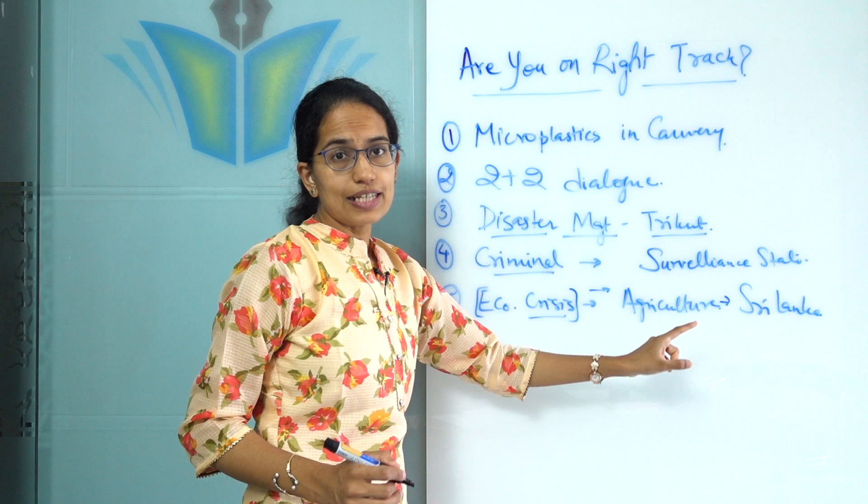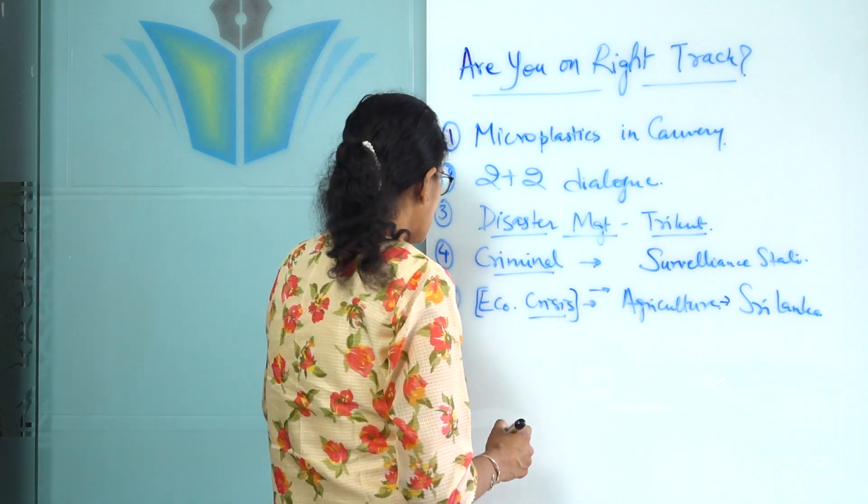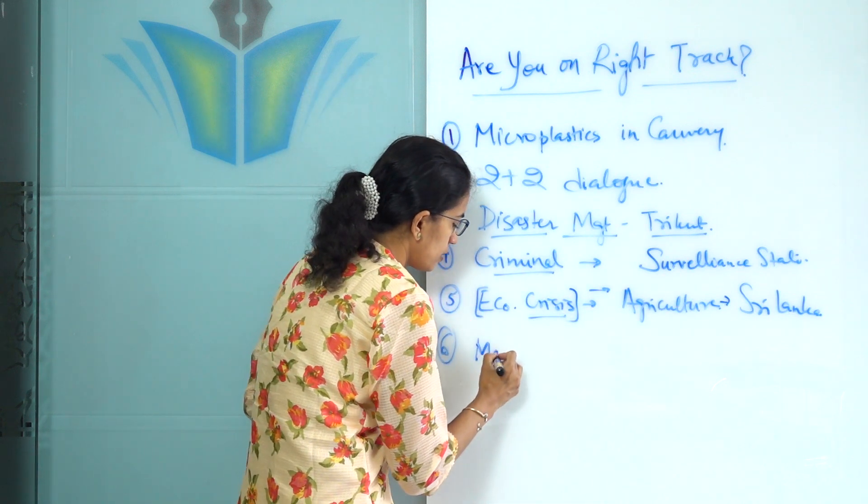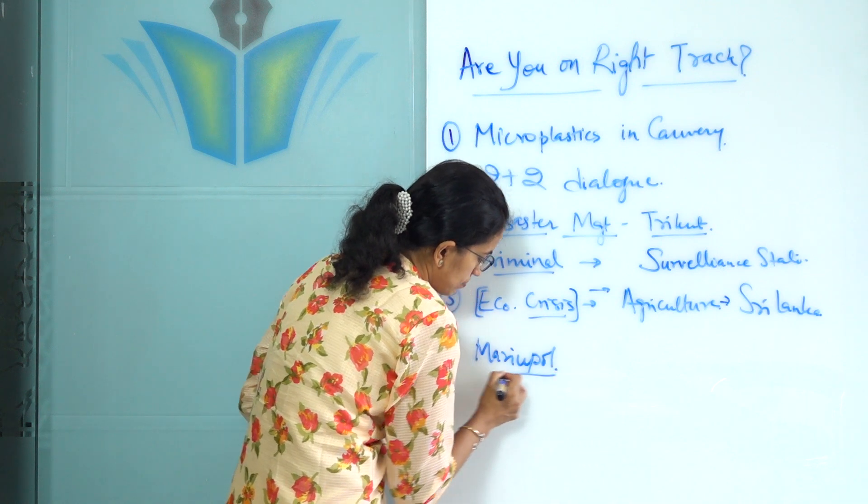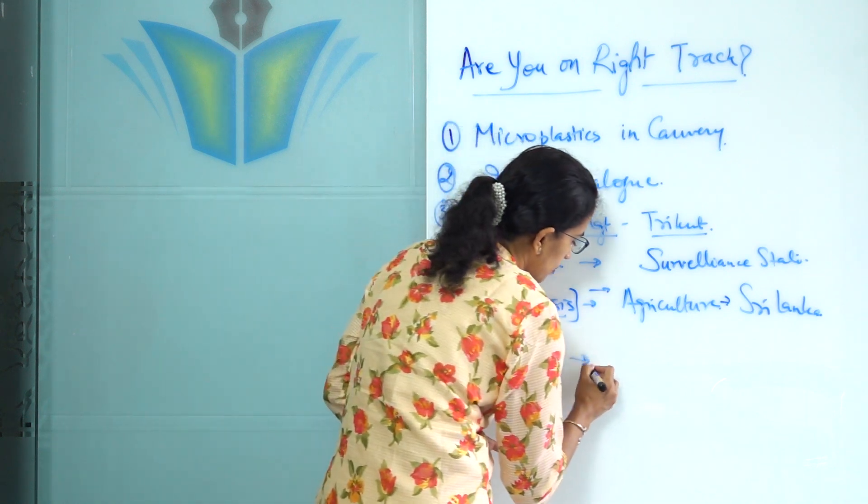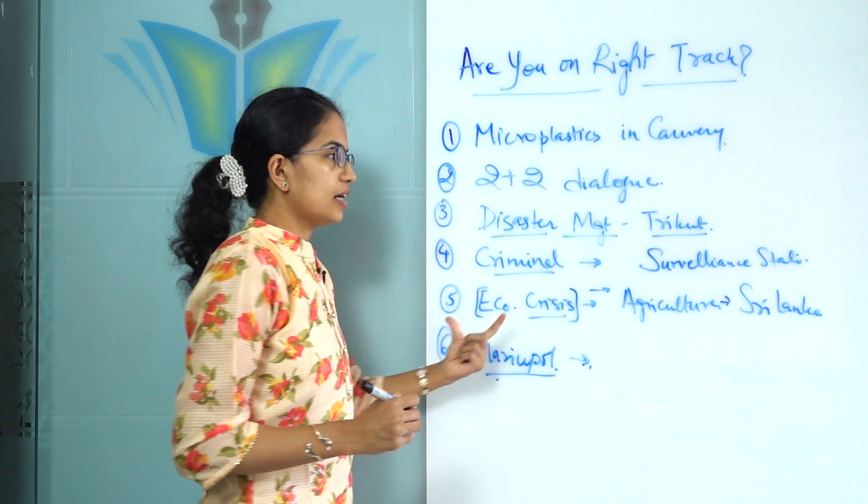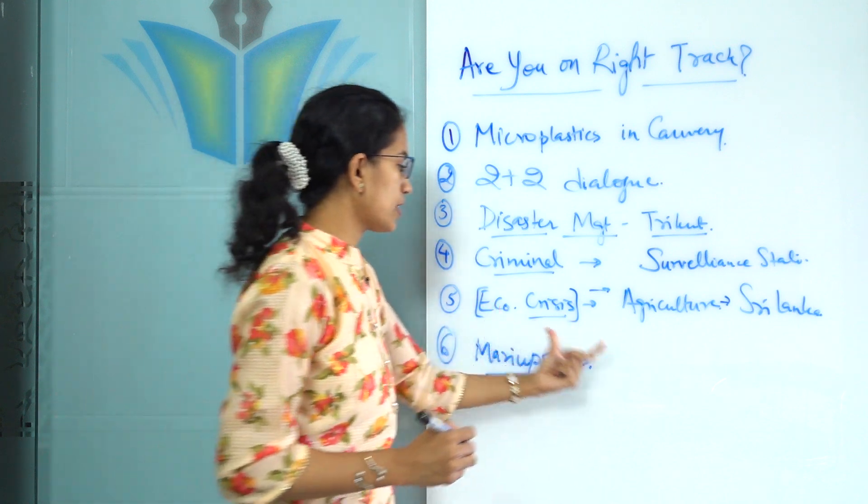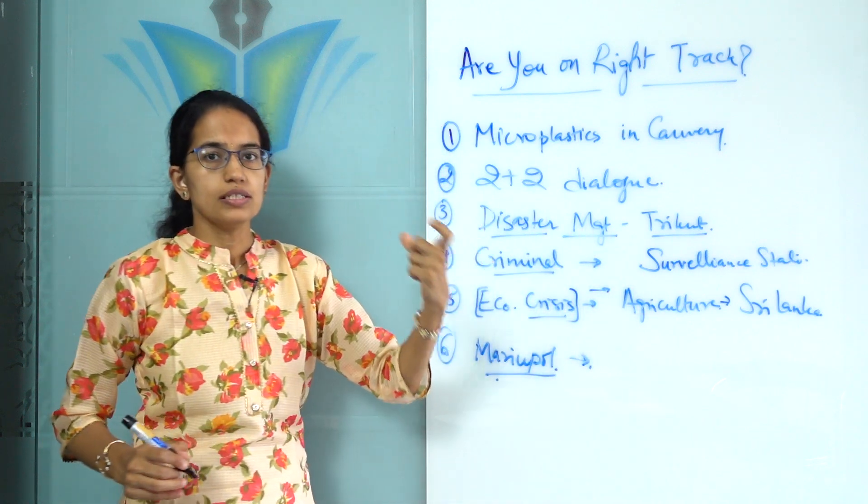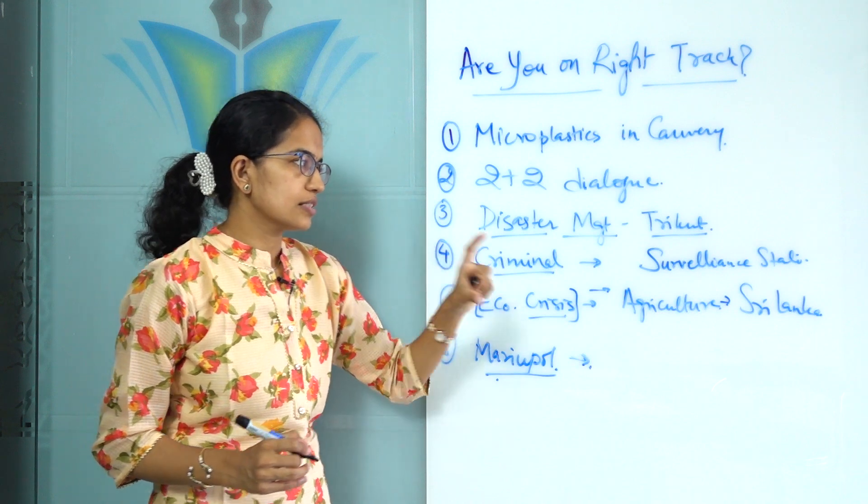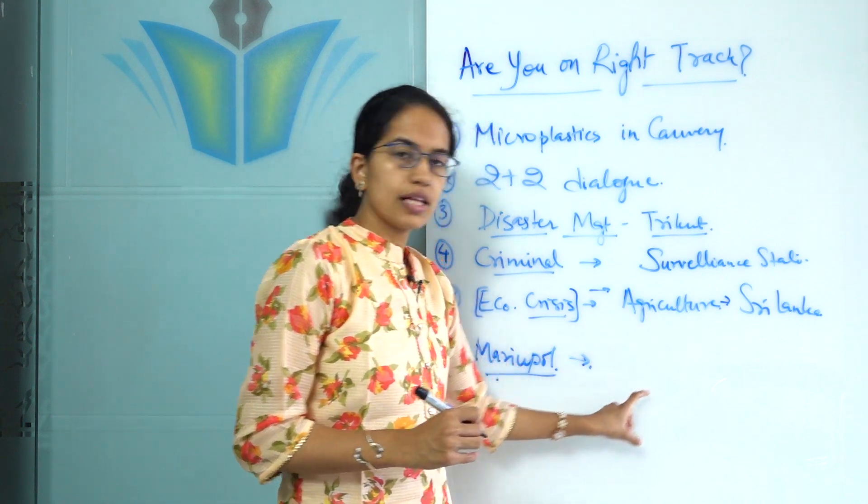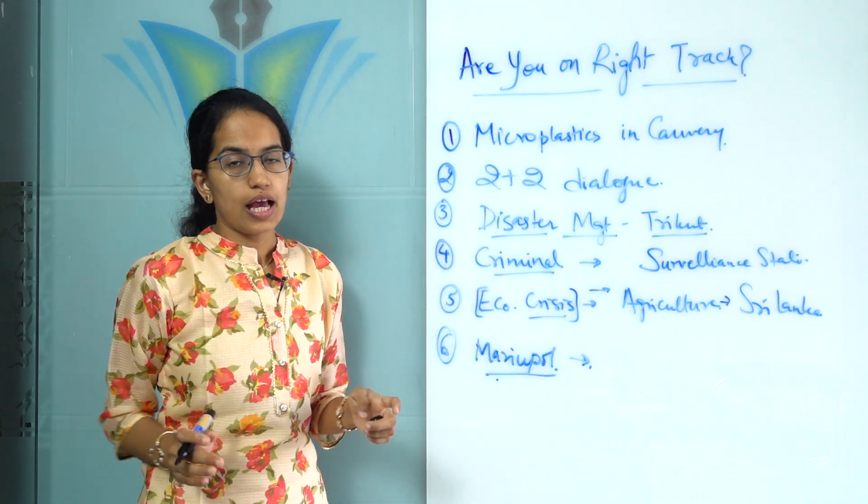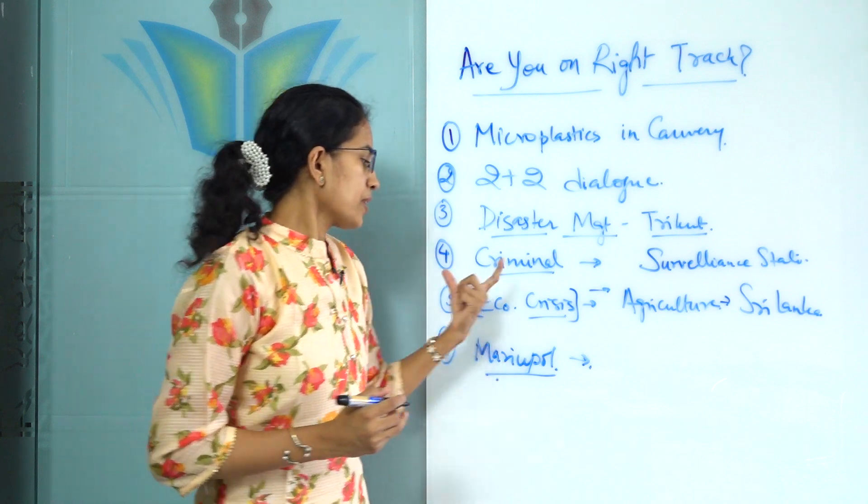The next important topic is Mariupol. The recent capture by Russia of Mariupol is important, and in the class on geography of Ukraine we have talked about the basic minerals and the reasons why Ukraine and the east of Ukraine has been a target region.